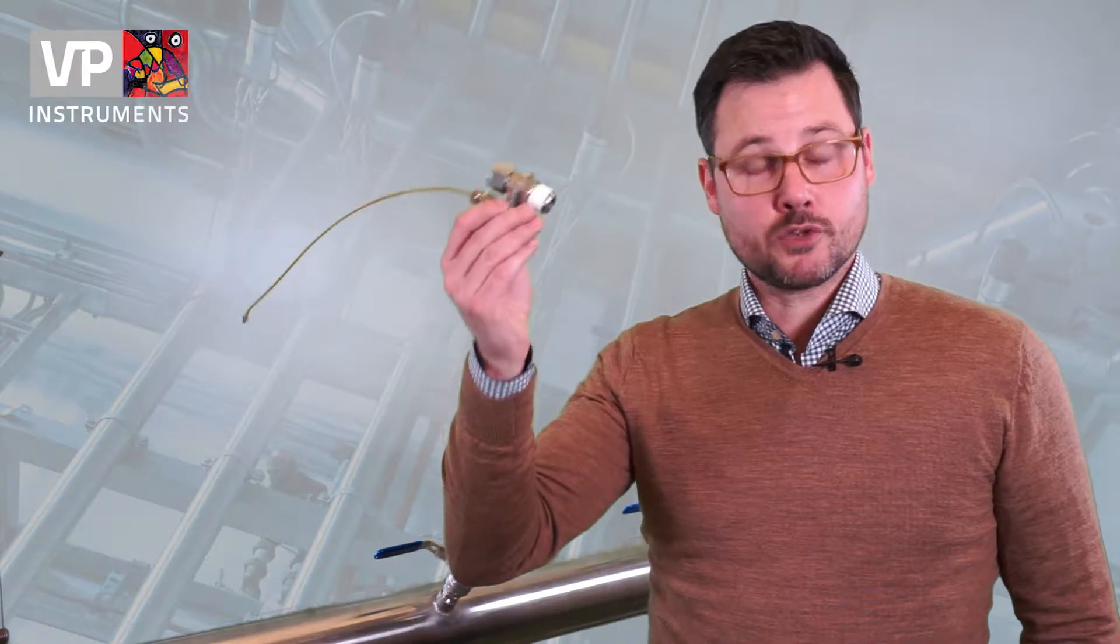Another way is to first mount the compression fitting on the ball valve, and then build the flow meter up from there. So let's mount it.